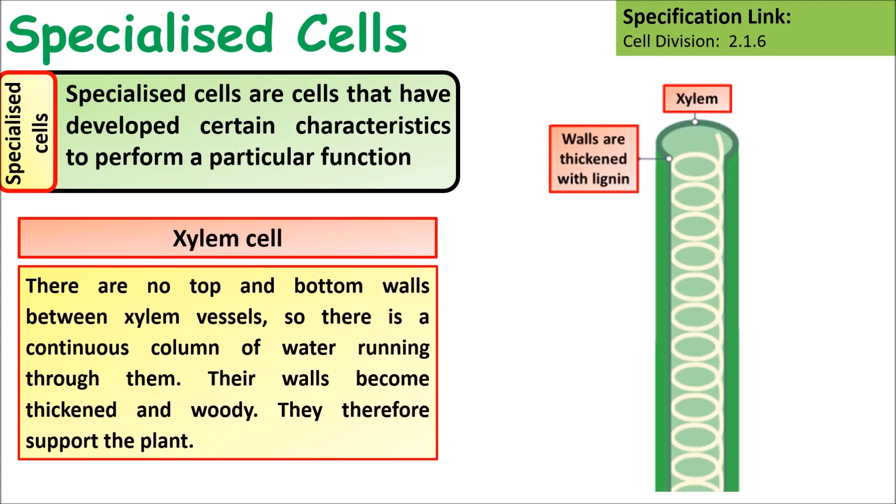Xylem cells form long tubes that allow water to be carried up through plants. There are no top and bottom walls between the xylem vessels, creating a continuous column of water running through them. Their walls become thickened and woody, helping to support the plant.